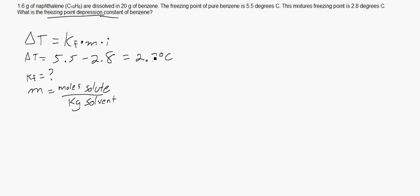So, we got our delta T. We are looking for KF. So, obviously, we're going to have to use molality somehow to find, to plug it into this equation and to find KF. To work backwards and find KF. So, how can we get moles of solute and kilograms of solvent? Again, solute is the C10H8. The solvent is the benzene.